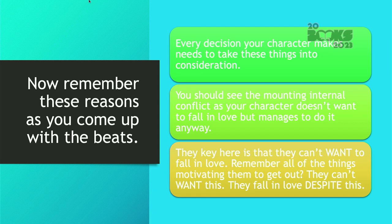The key here is they don't want to fall in love. Remember all of the things motivating them to get out — they can't want this, but they do fall in love despite it. One caveat: you can have characters that are already in love with each other but are too afraid to say their feelings. I'm reading a book right now where both characters are in love with each other secretly, but they have this friendship they don't want to ruin, so that is why they can't come out and say let's date, let's be together.